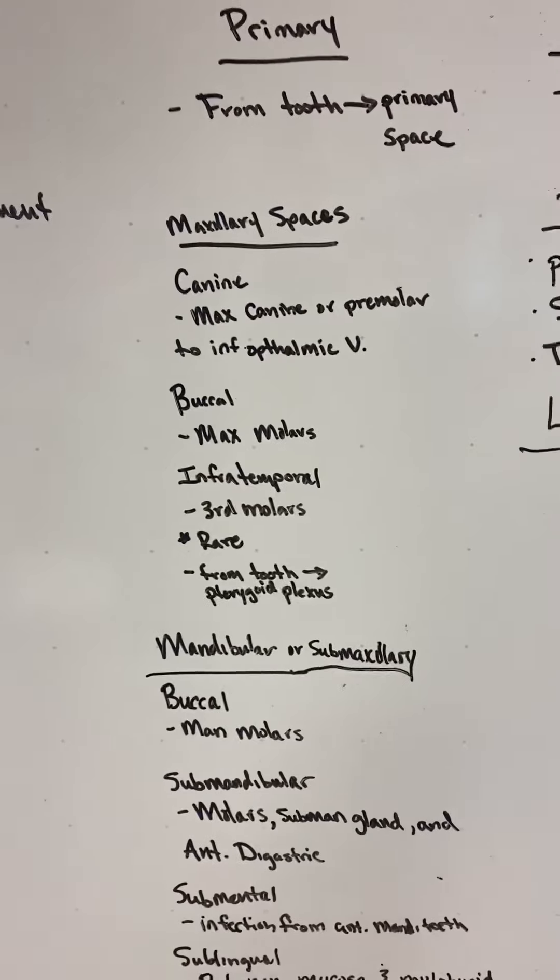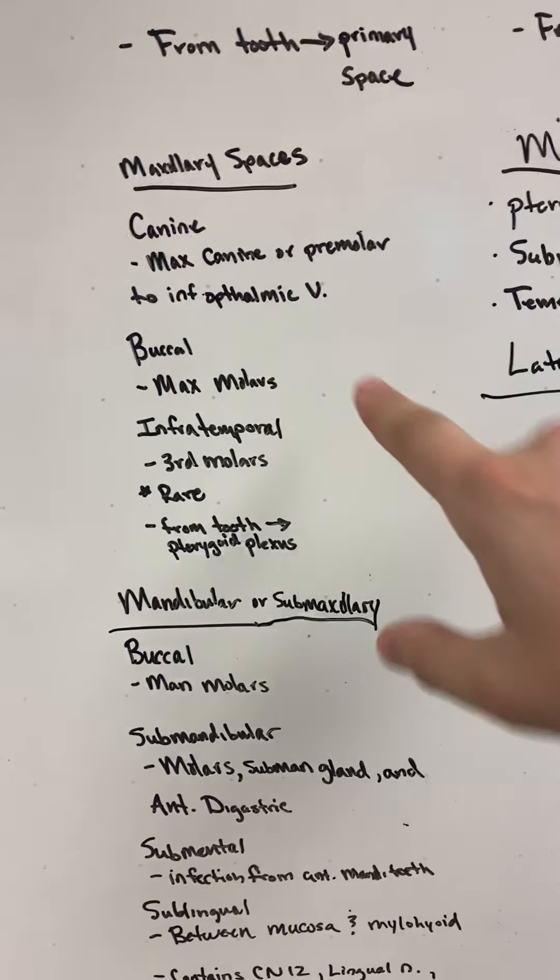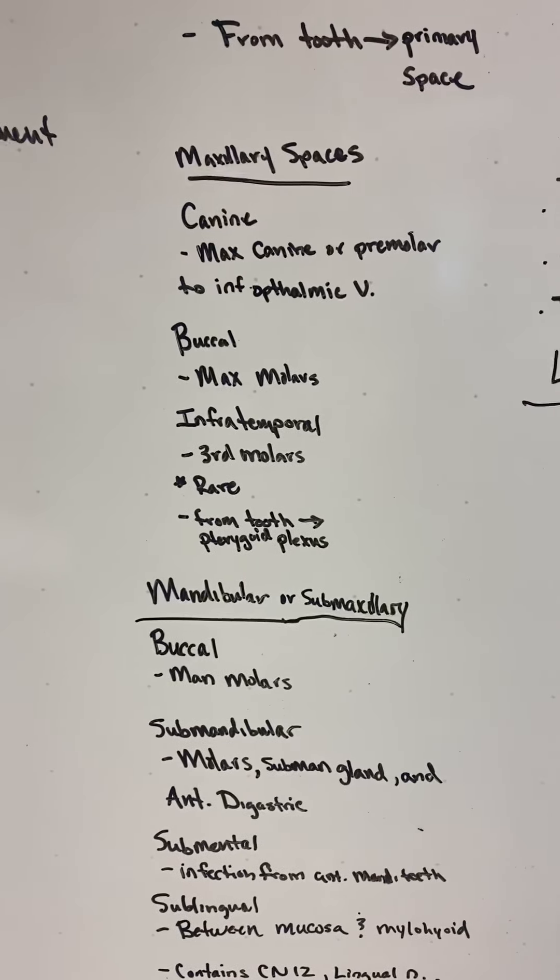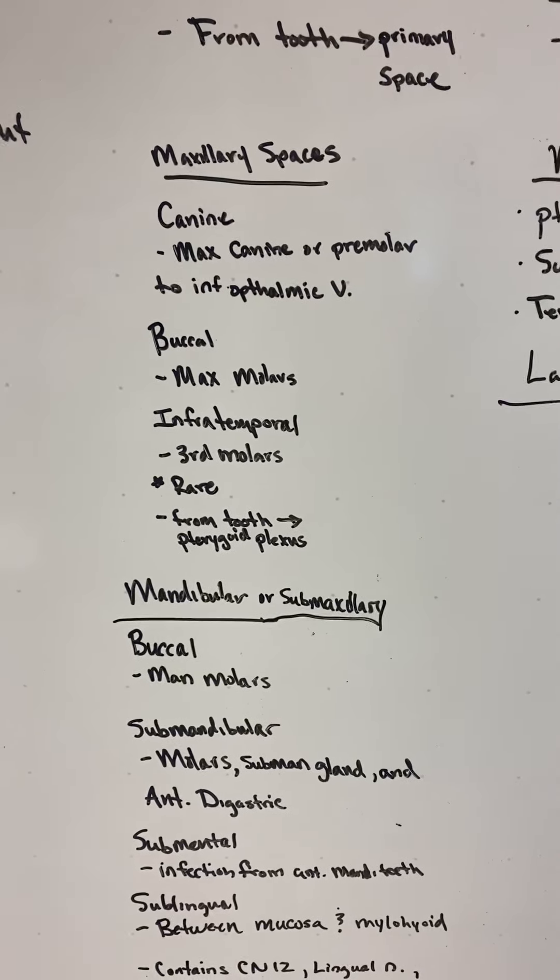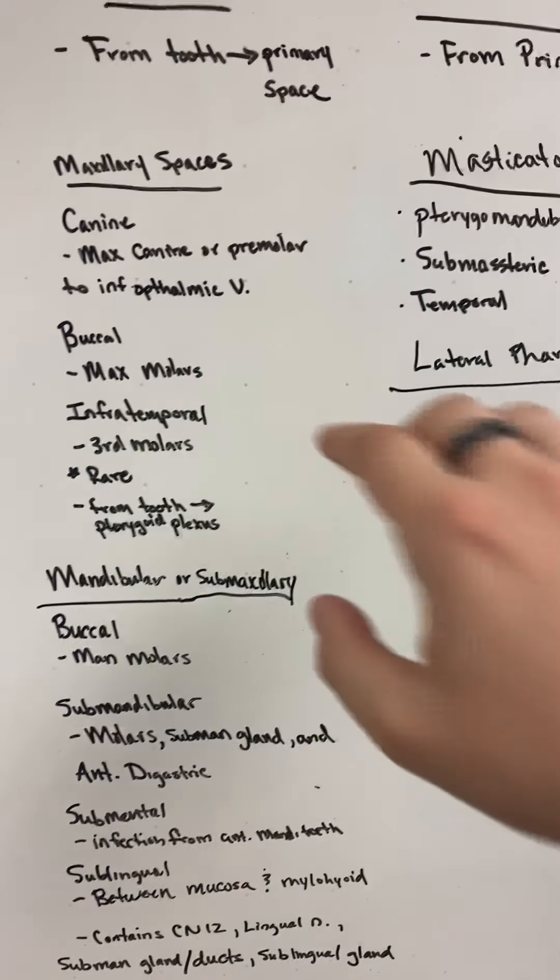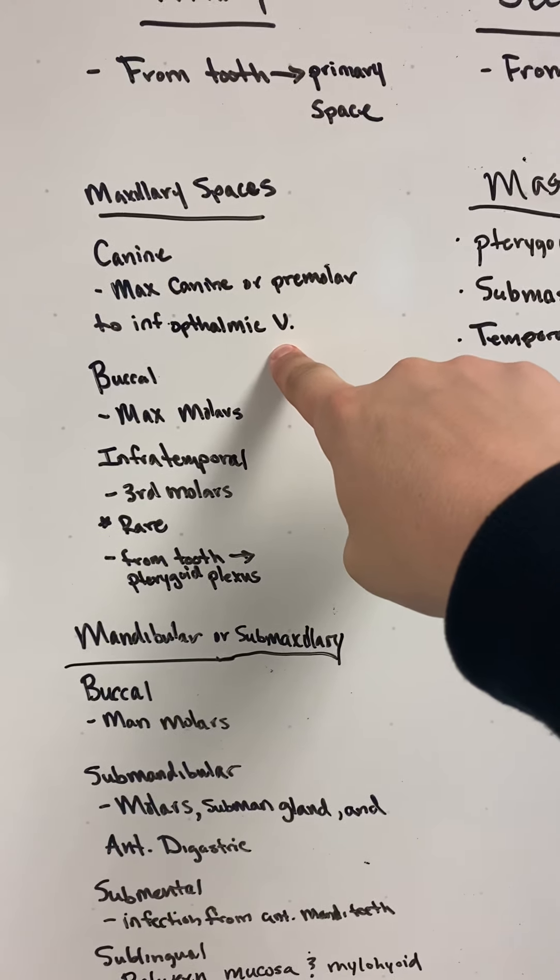For the maxillary spaces, we have maxillary and then mandibular or submaxillary. For maxillary, we have the canine, and obviously that'd be the canine or premolars, and it goes from the inferior ophthalmic vein. When you go over the veins lecture, you know that this guy connects to the cavernous sinus.